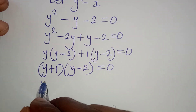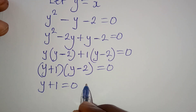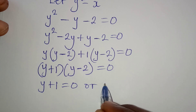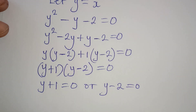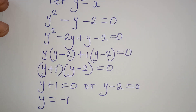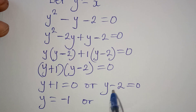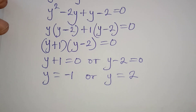So y plus 1 together and y minus 2 together equals 0. Now y plus 1 is either equal to 0 or y minus 2 is equal to 0. From here, y will be equal to minus 1, or on this side y will be equal to plus 2.